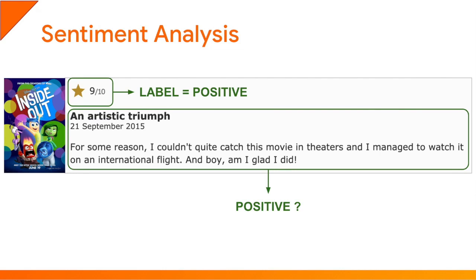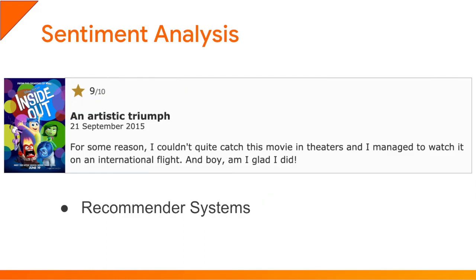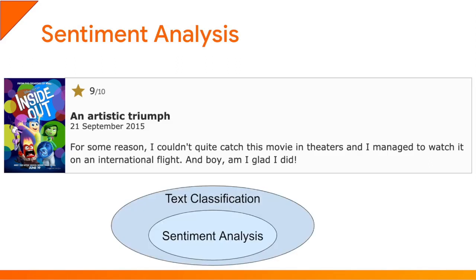Sentiment analysis can be useful in many other ways. It could be used in a recommender system, for example, to tell you which restaurant to go to based on what people say about it on the web. Another example is to automatically analyze financial articles to determine how positive or negative people feel about the market or about specific companies. If all the model does is classify text as positive or negative, then it's just a subset of the more general text classification task, which can automatically organize large amounts of documents such as in a public library or in search engines.